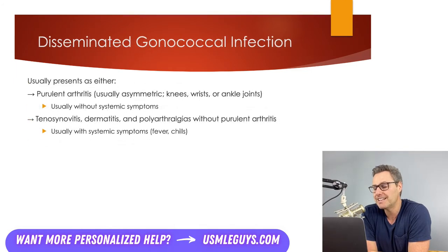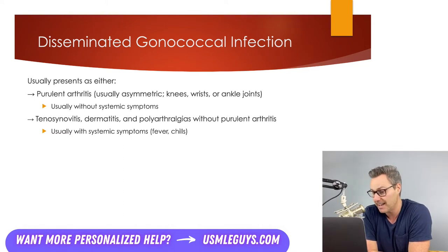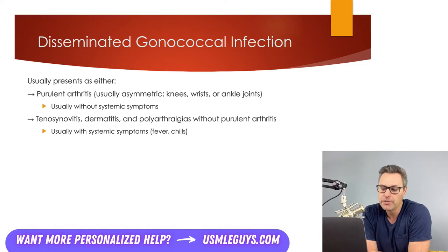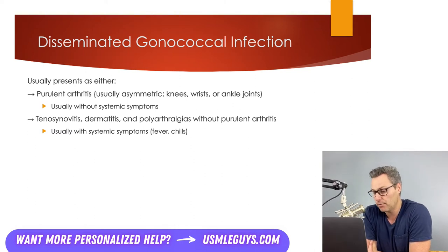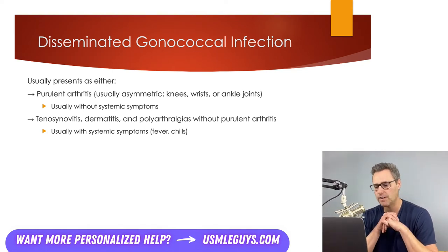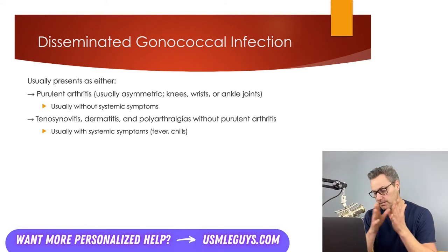Patients can also develop disseminated gonococcal infection, where the microorganism travels outside the site of infection to various other systems. A classic manifestation is the triad of tenosynovitis, dermatitis, and polyarthralgias. Tenosynovitis is tenderness along the tendon sheath and/or pain with adjacent joint movement. Dermatitis presents as pustular or vesiculopustular lesions. The joints are not purulent in this triad, and patients are typically febrile. Patients who present with purulent arthritis usually don't have systemic symptoms. Very rarely, disseminated gonococcal infection can cause endocarditis, meningitis, or osteomyelitis, but it's more likely you'll be tested on the MSK and skin findings on your STEP2CK exam.